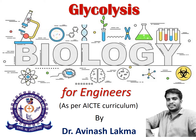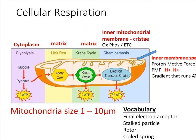Hello everyone, welcome back to our online lecture series. In today's lecture we'll be learning about the glycolysis pathway. Glycolysis is a chain of reactions which converts glucose to pyruvate. There are 10 steps involving chemical reactions that convert glucose into pyruvate.